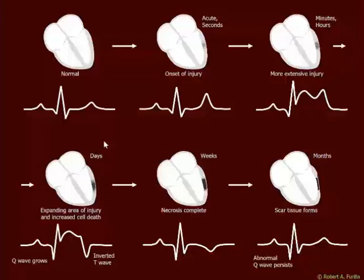Getting into the time after the first day and days later, we see an expanding area of injury with continued necrosis. The ST segment is still elevated and the T wave now inverts — at this point the necrosis is complete. Within weeks, the ST segment returns to its baseline position while the T wave remains inverted. Within months, we see collagen fiber scar tissue forming, and the T wave reverts back to its upright position.